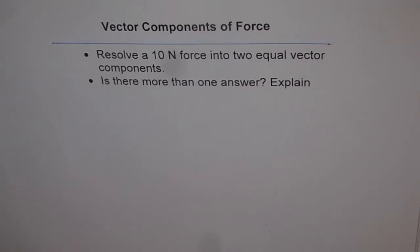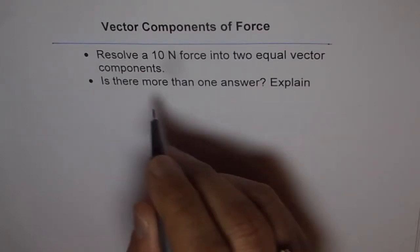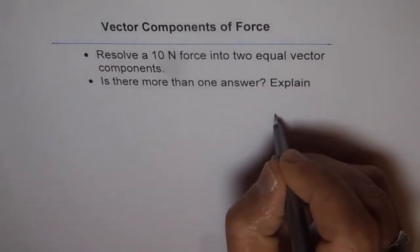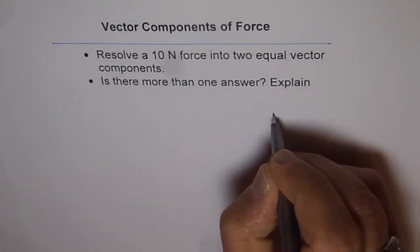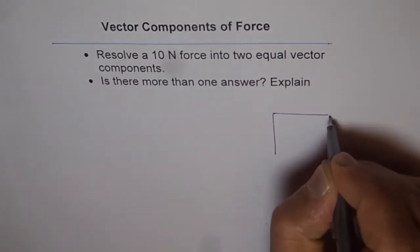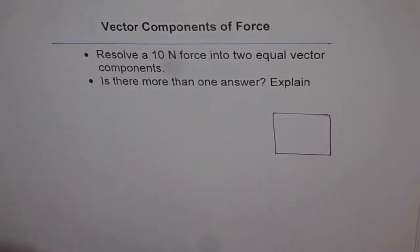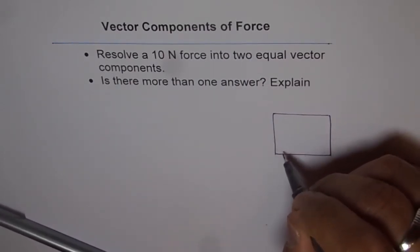Let's first resolve it into two equal vector components. If we have a force and we want to resolve it into two equal vector components, then we can think about a square where the force could be the diagonal of the square. Let me sketch one so we understand what we are trying to do. Let's say this is a square, and the diagonal of the square — let that be our force.